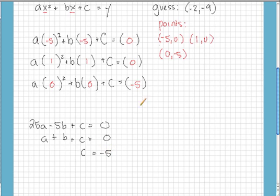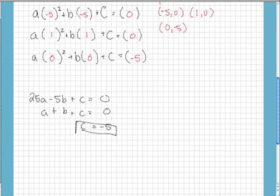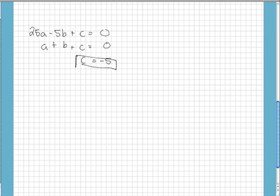Well, that's helpful because I can actually take this, c is equal to negative 5, and plug it into these two equations. So what I actually have now is 25a minus 5b minus 5, where the c was, is equal to 0. And a plus b minus 5 is equal to 0.